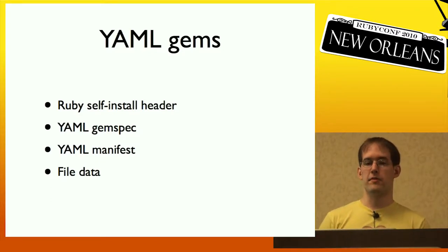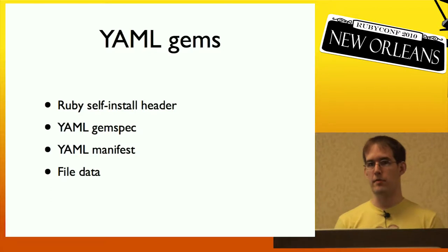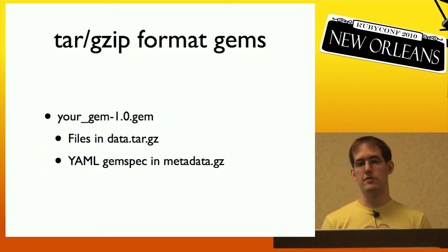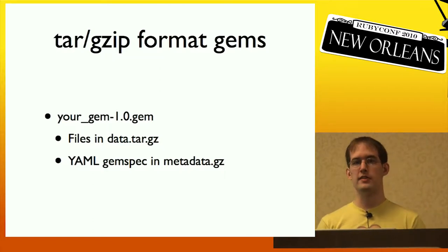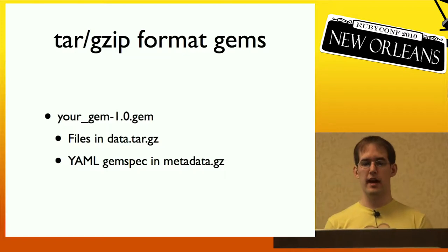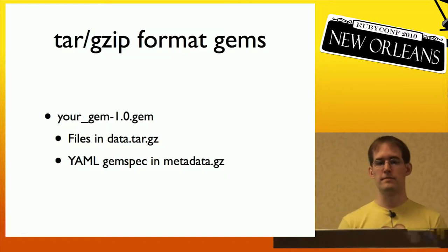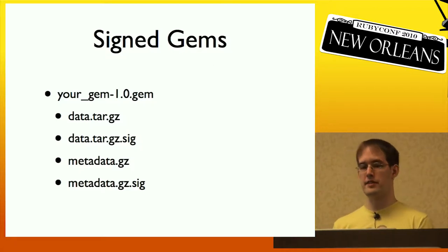The custom format was replaced with a tar/gzip format, which is a little more flexible and uses more standard tools. In the new format, a gem is a tar file, and inside that tar file is a data.tar.gz with all the files, and a gem spec in metadata.gz. And when we added signed gems, it was really easy to extend this by just adding a signature for each of those files.